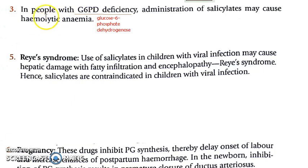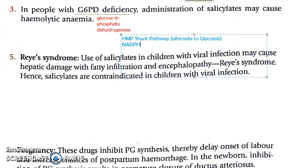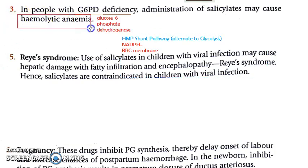In people with G6PD deficiency, giving aspirin may cause hemolytic anemia. Glucose-6-phosphate dehydrogenase is required for the HMP shunt pathway, which is an alternate pathway to glycolysis. This pathway produces NADPH. If NADPH cannot be produced, the RBC membrane will not be able to maintain its integrity and hence there will be hemolytic anemia. So only if the person has a G6PD deficiency should you not give aspirin.